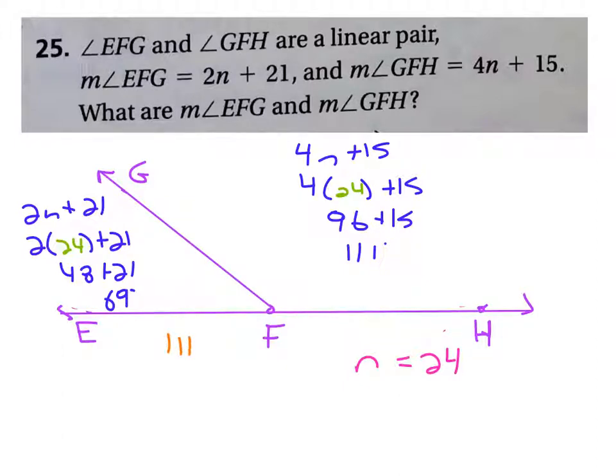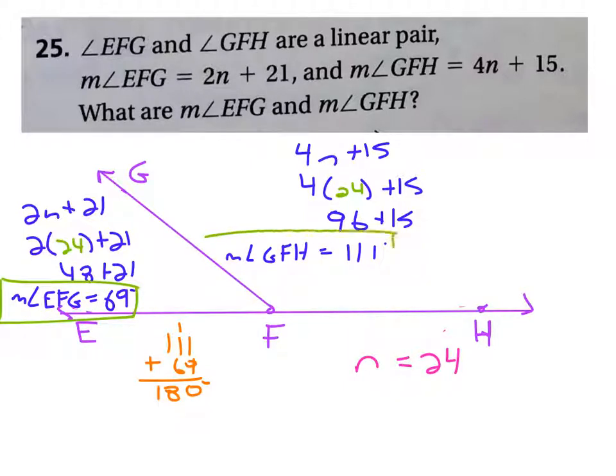Let's add them together and see what we get: 111 plus 69 equals 180 degrees. So these are our measures. The measure of angle EFG equals 69 degrees, and the measure of angle GFH equals 111 degrees. And there's your answer.